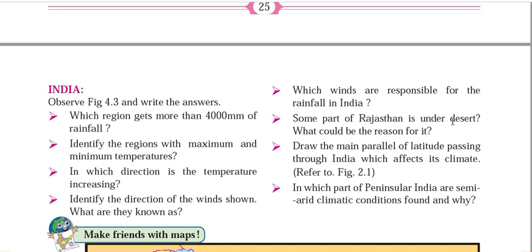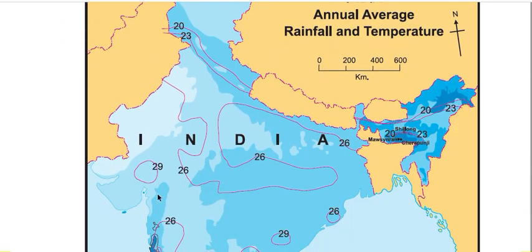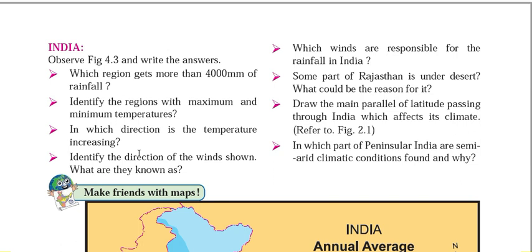Some part of Rajasthan is under desert — what could be the reason? The Aravallis range is parallel to the direction of south-western winds. That's why there is no big obstruction to these winds and therefore no rainfall in this particular region. As a result, desert formation takes place in the western part of Rajasthan.